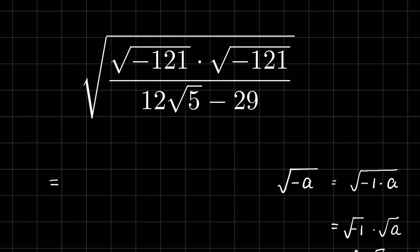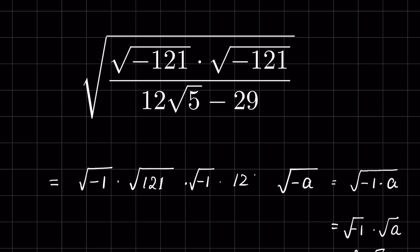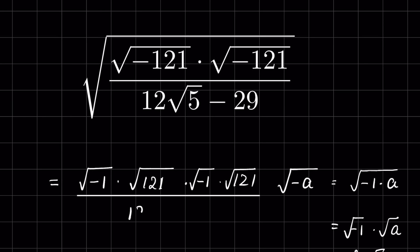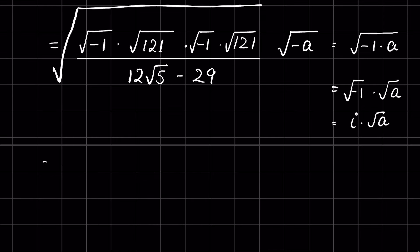So √(-121) = √(-1) × √121. Applying this to our expression: √(-1) × √121 times √(-1) × √121, divided by 12√5 - 29, all under a square root. √(-1) = i, and √121 × √121 = (√121)².